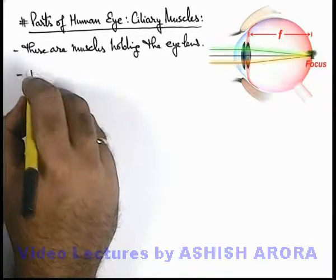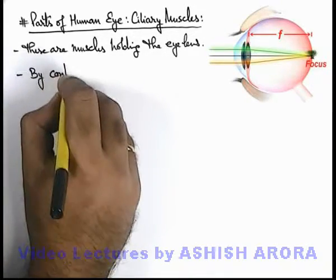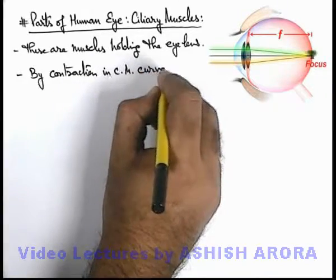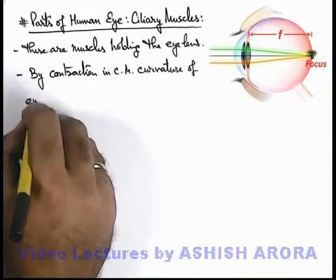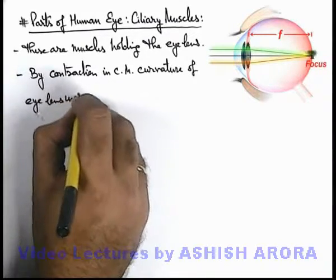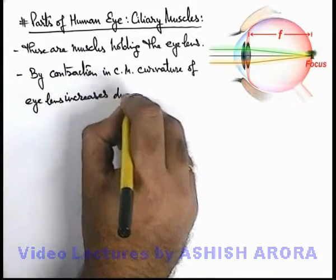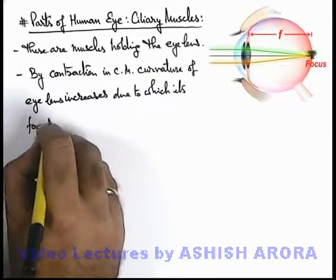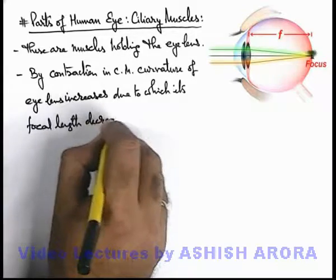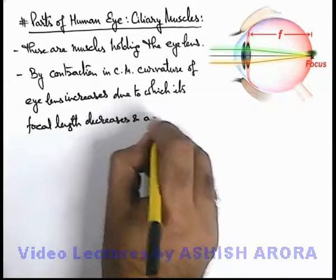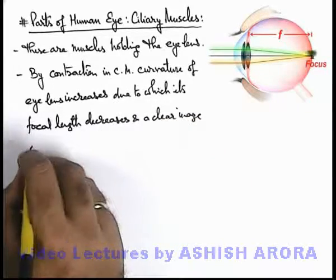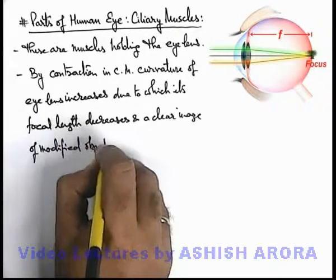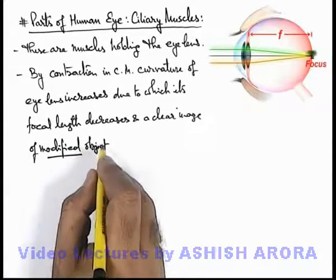Now the important thing about ciliary muscles is that by contraction in ciliary muscles, the curvature of the eye lens increases, due to which its focal length decreases. A clear image of the object which is being seen is produced. The modified object means the object which is being looked at, and its image is produced by relaxation or contraction in the ciliary muscles.